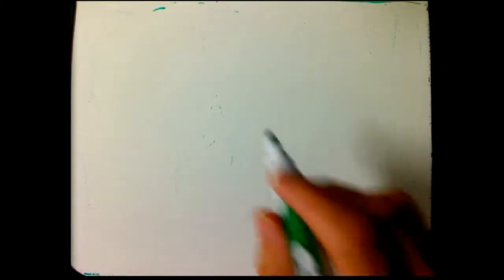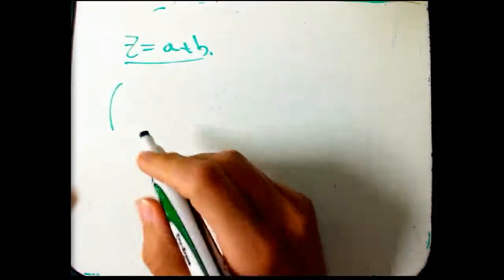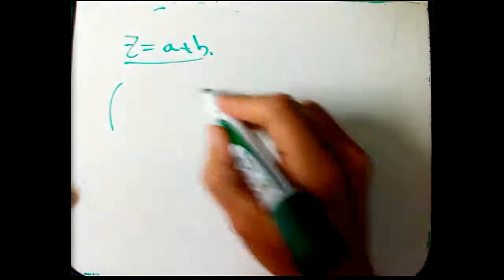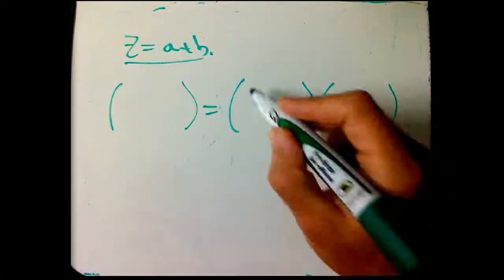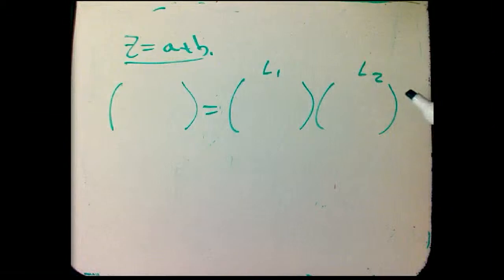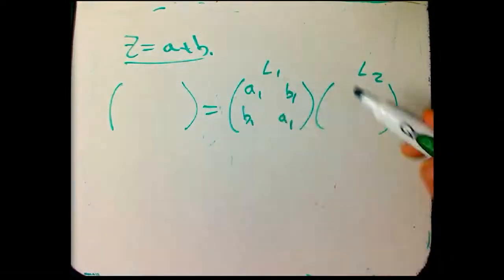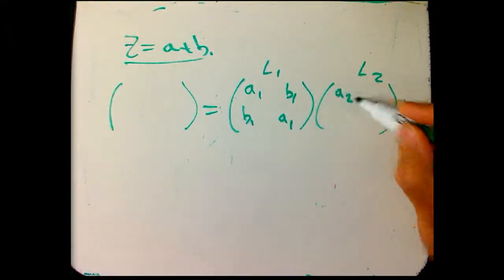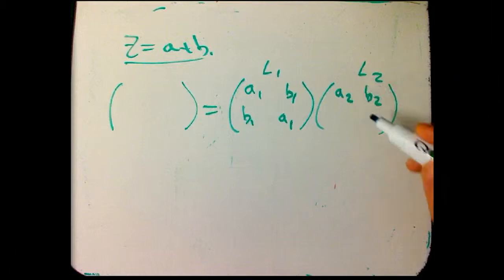We're going to say z is this a plus b factor. And now I'm going to go back to what was a problem before. I'm going to look at two Lorentz transformations, L1 and L2. I'm just going to put them in as a1, b1, b1, a1. We're just going to remember that the structure of the Lorentz transformation is that these two are equal and these two are equal. That's not all we know about it, but that's all we need to know right now.